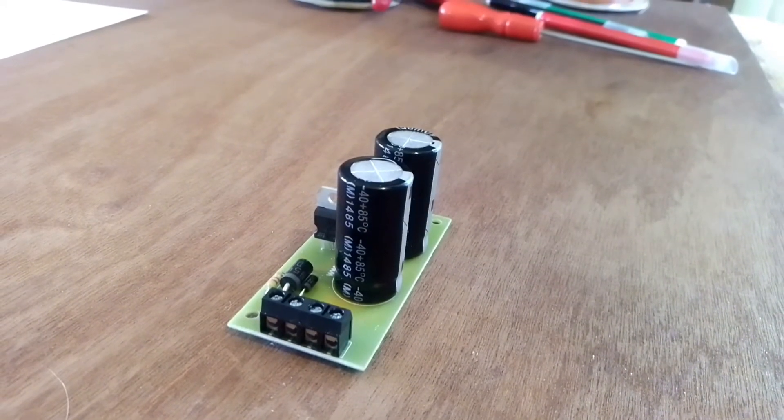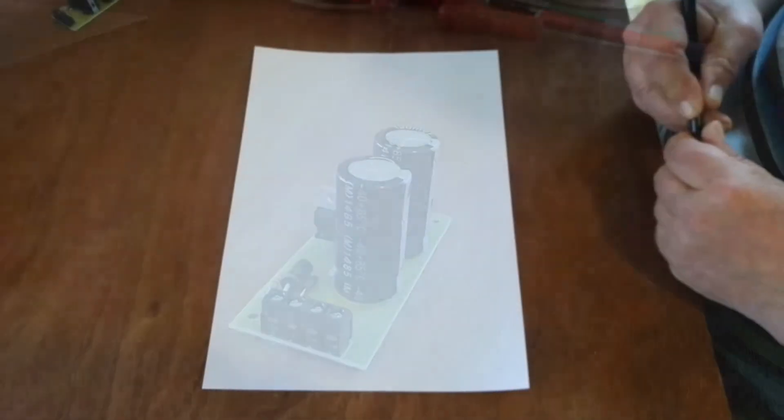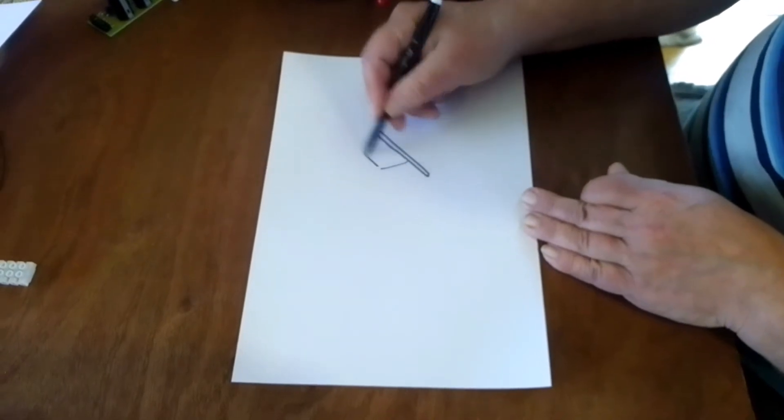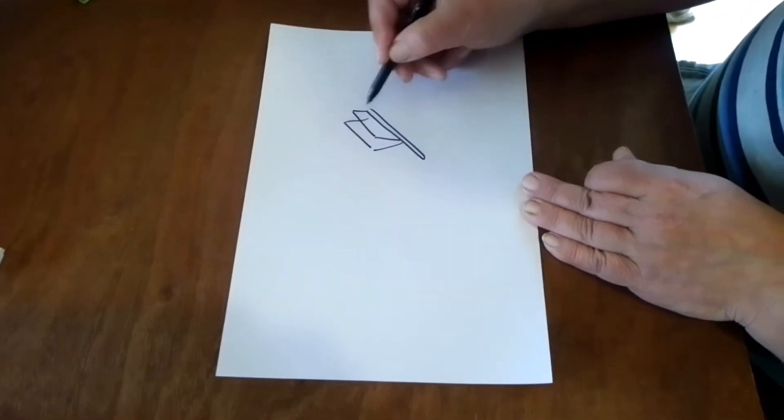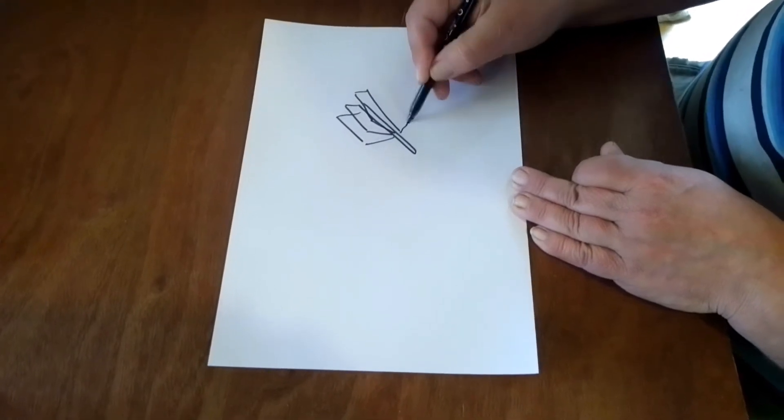I can explain how the capacitor discharge unit works with an analogy to water. Imagine you've got a water wheel.